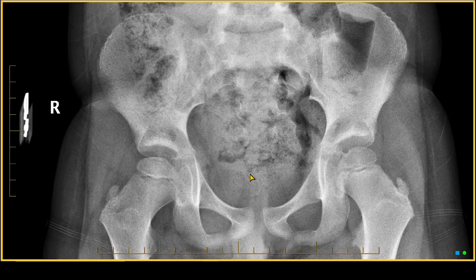What immediately grabs my attention is the density on one side versus the other. You notice this side is quite a bit brighter than on the contralateral side. In addition, there is a linear thin lucency just under the chondral surface on the right, as you see here. On the left there's no similar lucency.